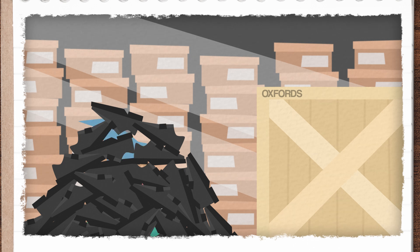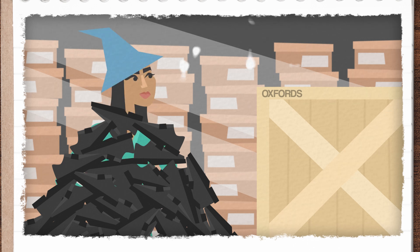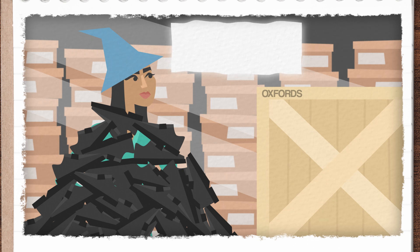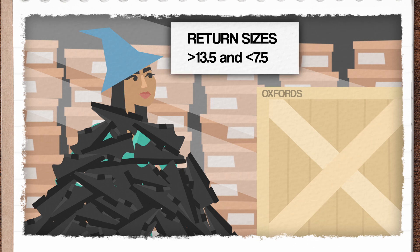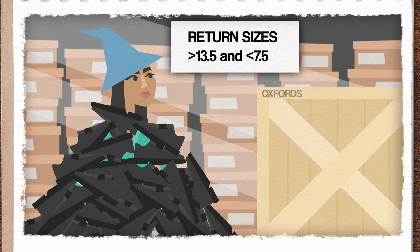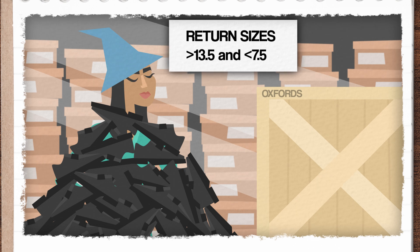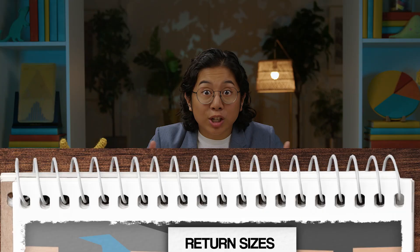But after just a few seconds, and without so much as a calculator, Mariam confidently works out that she can return all sizes above 13.5 and below 7.5 and still cover about 95% of her future sales. Witchcraft! Or just a good grasp of data distribution.